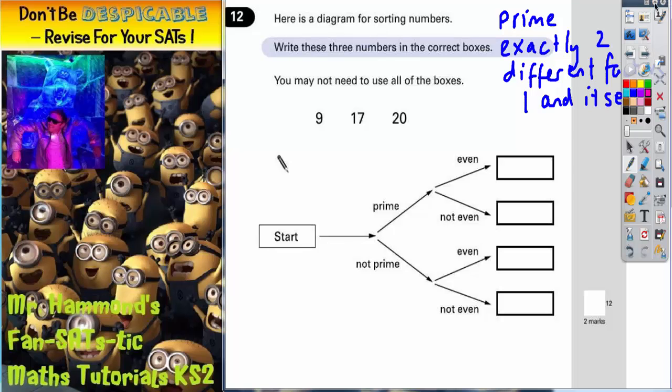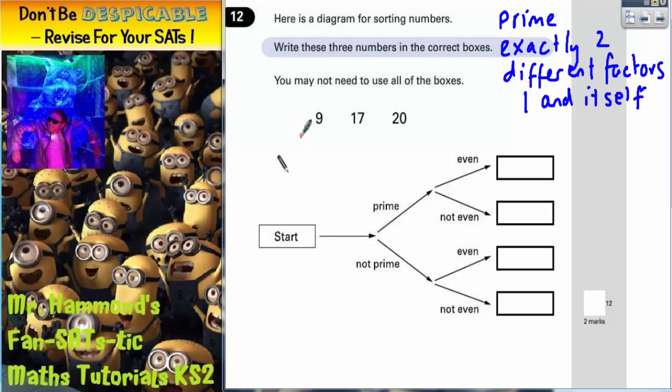So let's start with the number 9. Well, to make the number 9, we can have 1 times 9. So there's two factors straight away. And we can have 3 times 3. So how many factors has the number 9 got? It's got 1, 9, and we only count the three once because these two are actually the same. So it's got three factors.